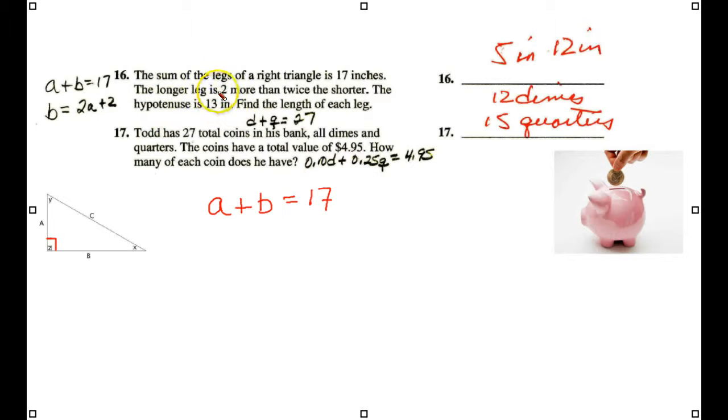And it says the longer leg, which is b, it's two more than twice the shorter. So twice the shorter would be 2a and two more. So these are our equations. And what method? Well, this one's obvious already. We'll use substitution.